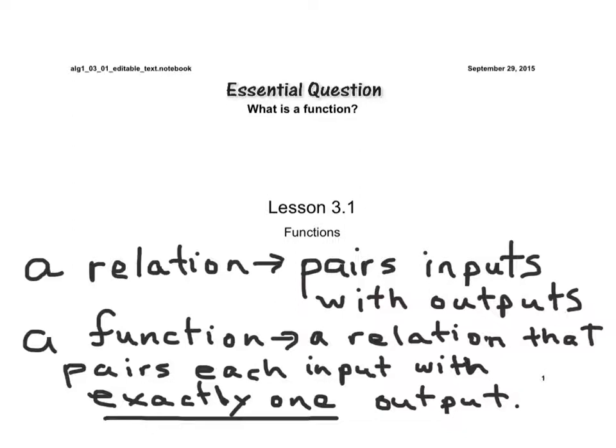A function is a special type of relation that pairs each input with exactly one output. And as we go through some examples here, you'll understand these definitions more clearly.